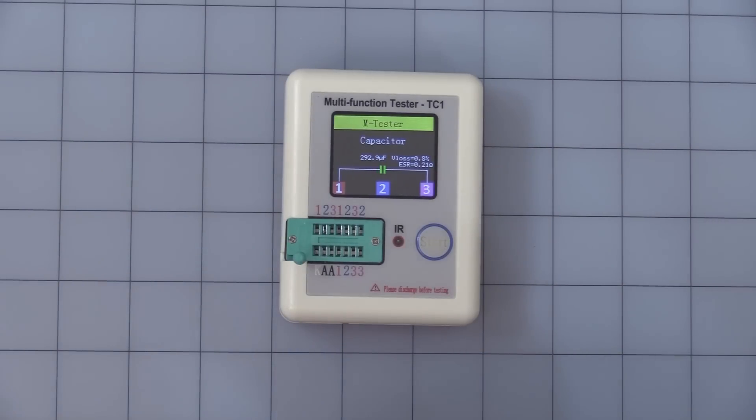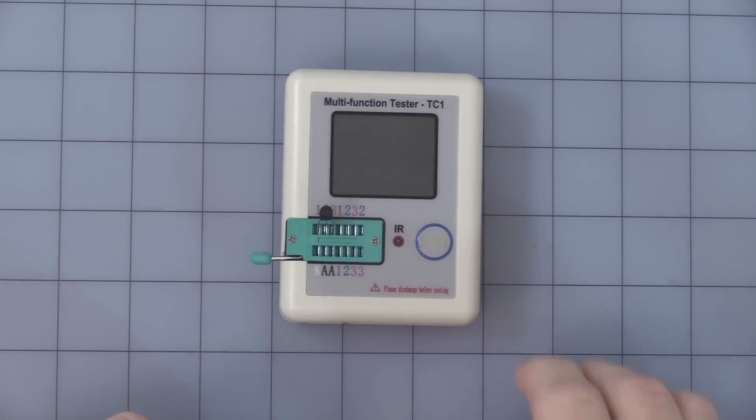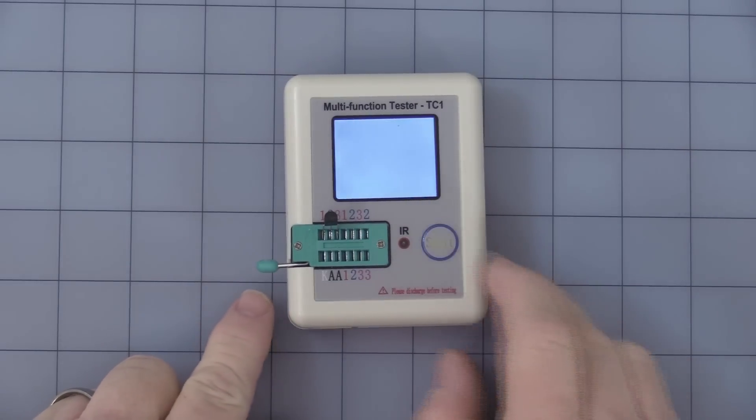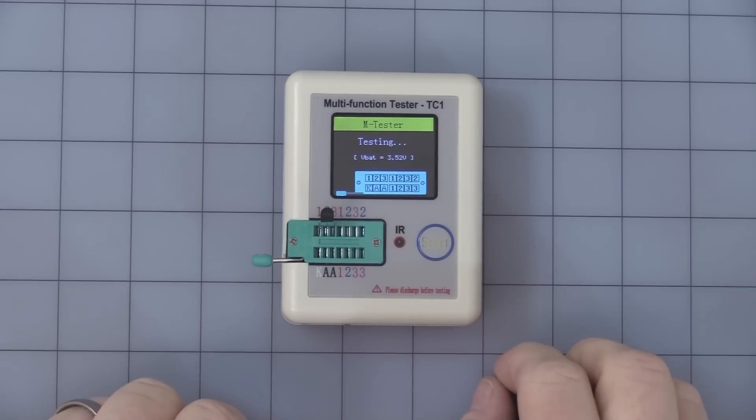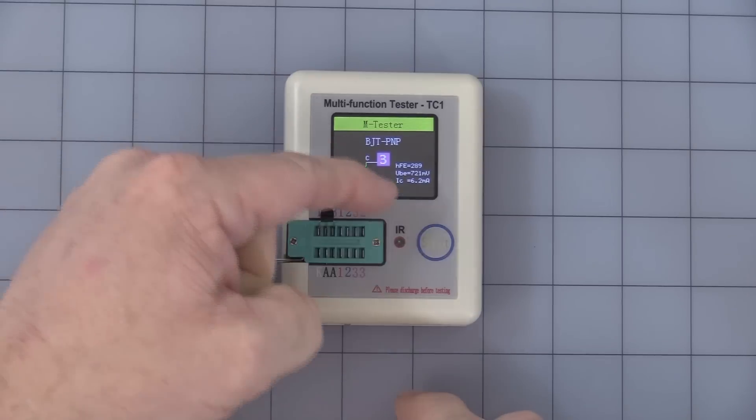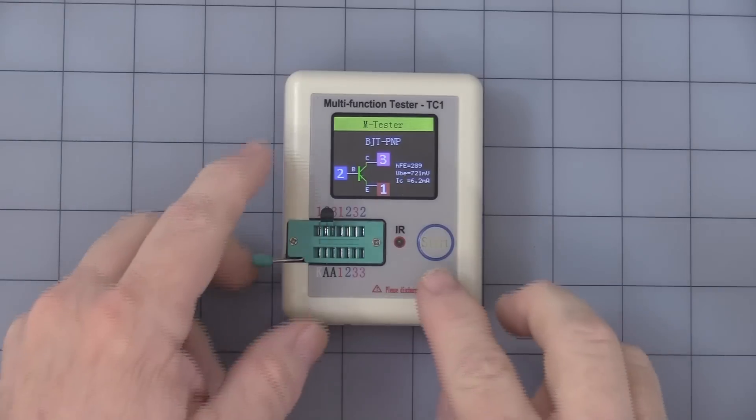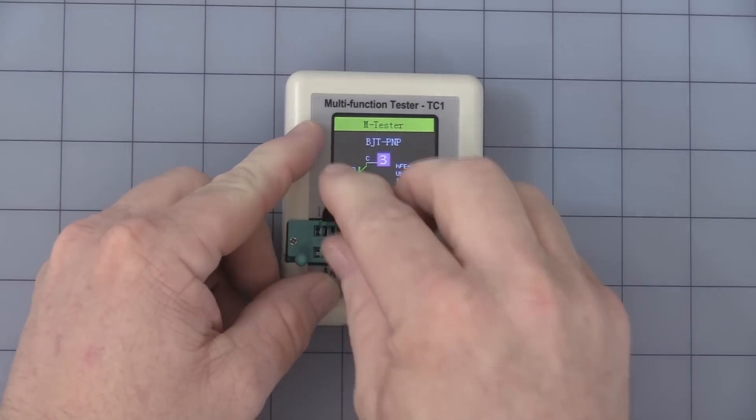Now we get into a 2N3906, a PNP. There you can see it recognized PNP. And like I said, you have to be careful with the numbers of how you have it plugged in compared to a data sheet.